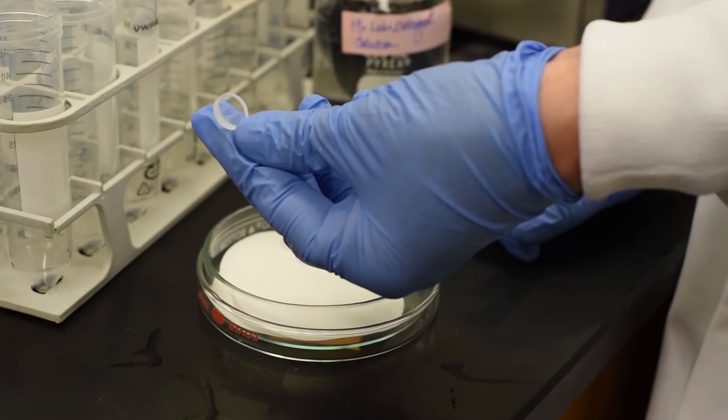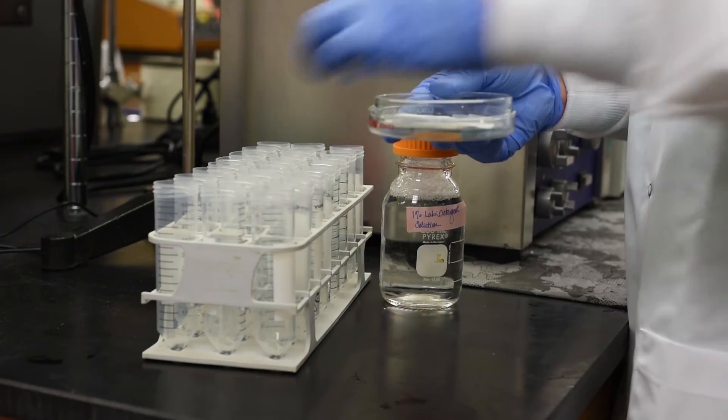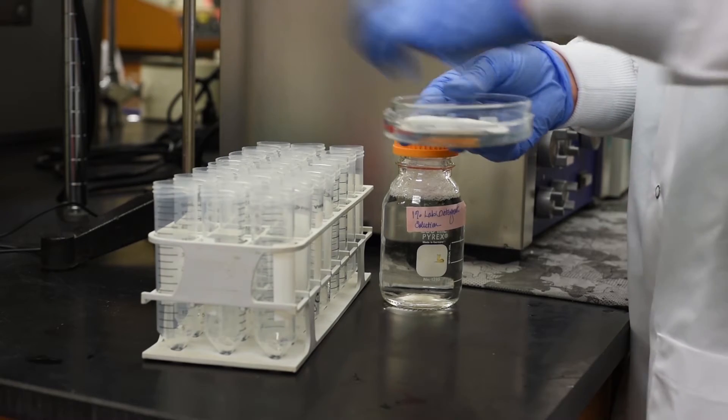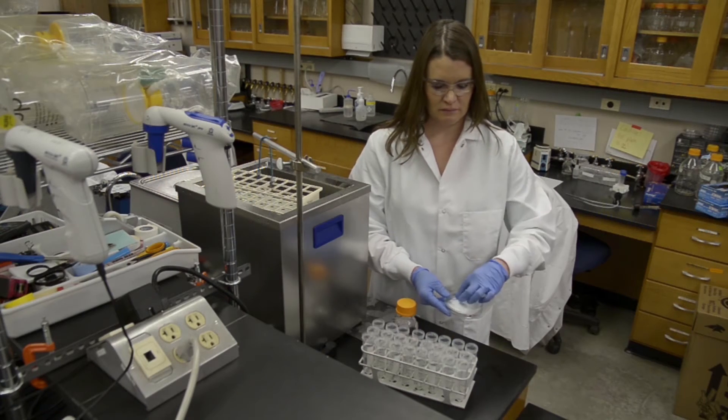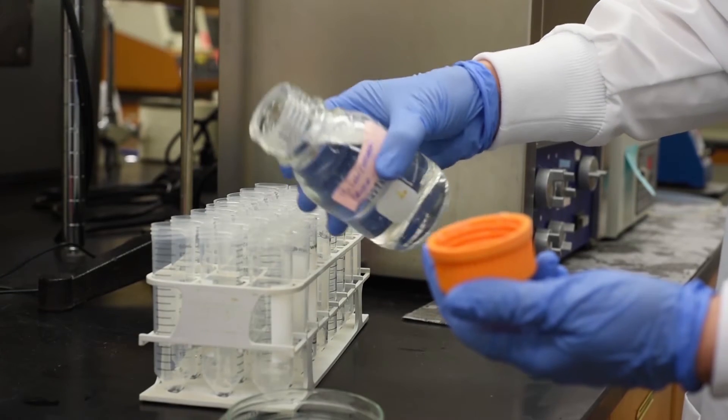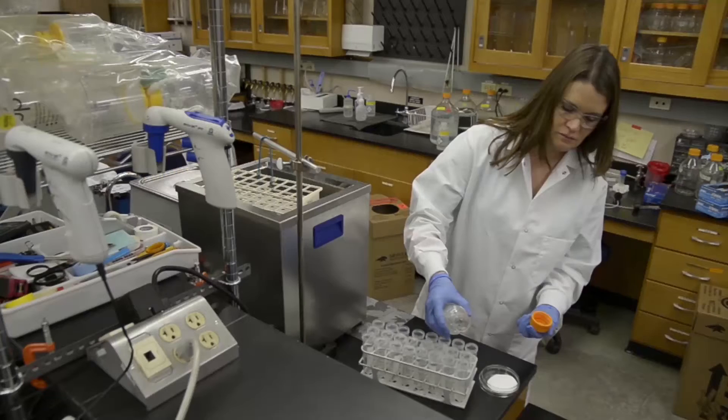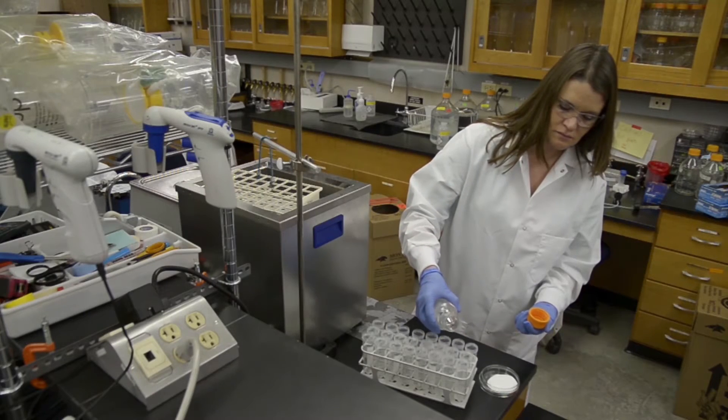For glass or other coupon materials that are easily scratched, place coupons in individual 50 milliliter conical vials. Pour 1% laboratory detergent solution into the vials so that the coupons are covered.